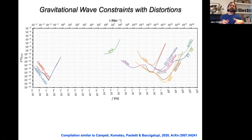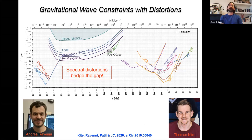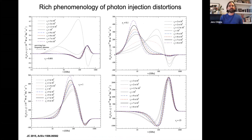Gravitational waves can also be probed with spectral distortions because they induce acoustic modes that dissipate. Looking at the gravitational wave power spectrum, large scales are probed by experiments like LiteBIRD measuring r, small scales are probed by many experiments, and spectral distortions would probe regimes right in the middle. Tom Kite and Andrea Ravenni have just completed work on this bridging the gap, including phase transitions and non-standard physics — really exciting and interesting.